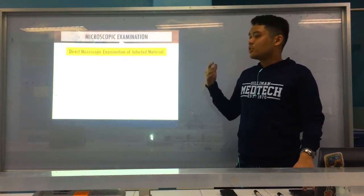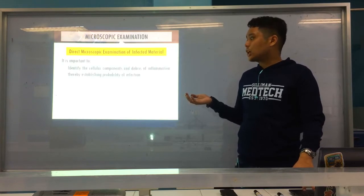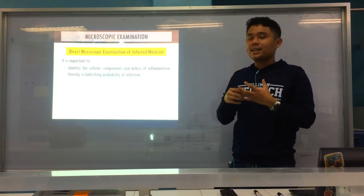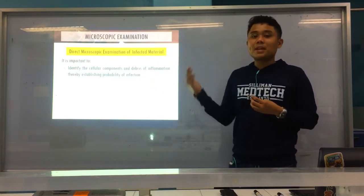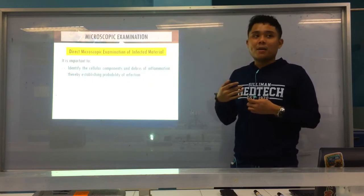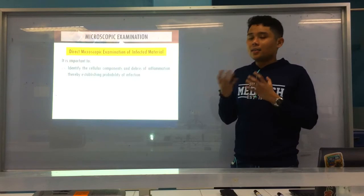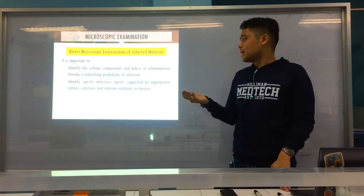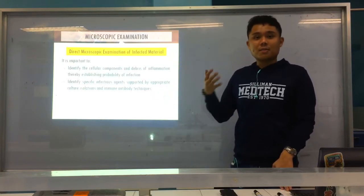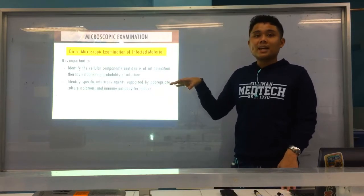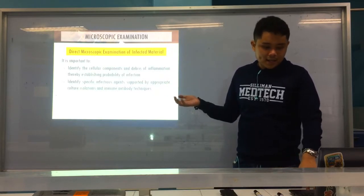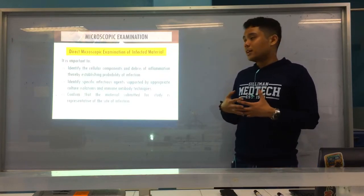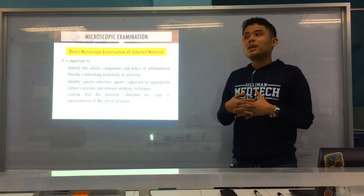First, we'll talk about direct microscopic examination from infected material, meaning from the specimen, you make a smear, and then stain it. You have to identify first the cellular components and debris of inflammation. Example, number of neutrophils, number of other cells involved. Next, we also have to identify the specific infectious agents through appropriate culture in bacteriology and immunological tests in your serology department. And we have to confirm that the material submitted is representative of the site of the infection.